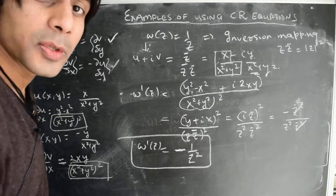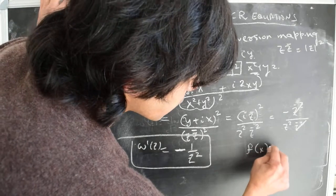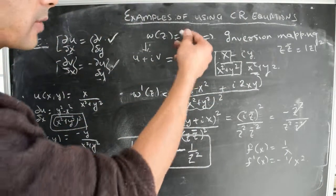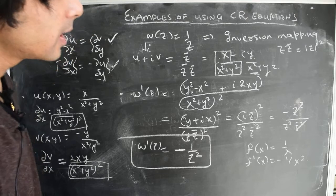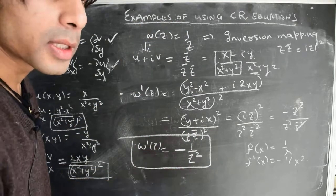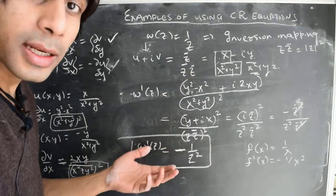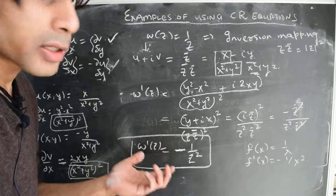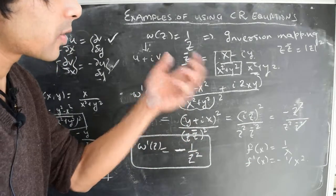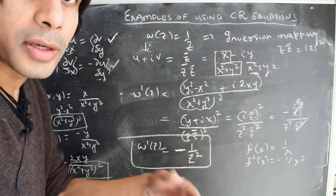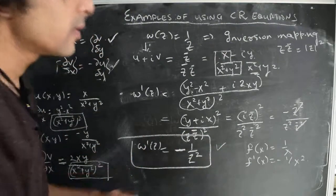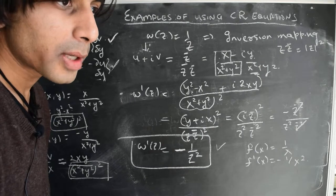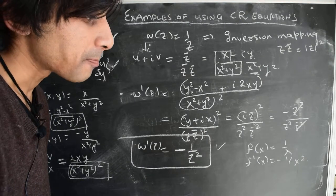Notice this is exactly the same result we would expect from real calculus: for f(x) = 1/x, f'(x) = -1/x². Here for W(Z) = 1/Z the derivative is -1/Z². This generalizes to functions of the form 1/Z^N — we can simply carry over the formula from real variable calculus to find the derivative of complex monomials 1/Z^N for any positive integer N. We'll look at more of these functions and their geometry in the coming videos.